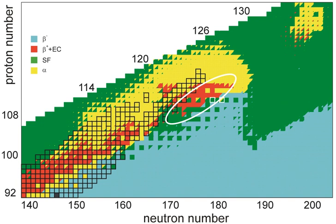For example, element 164 is expected to mix characteristics of the elements of groups 10, 12, 14, and 18.